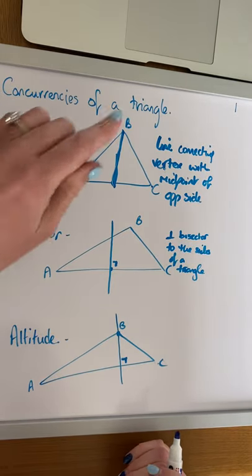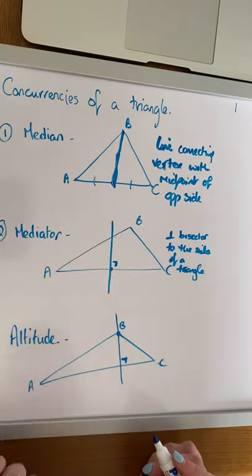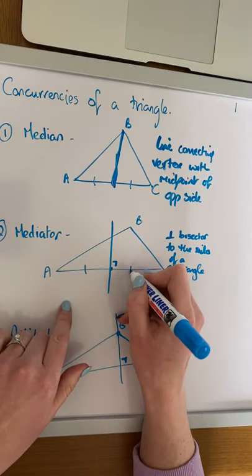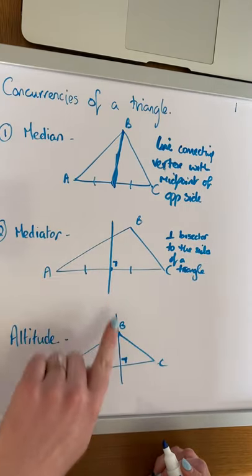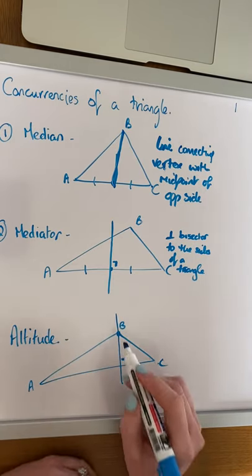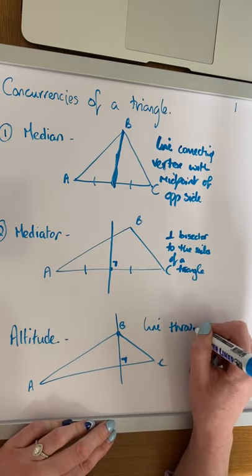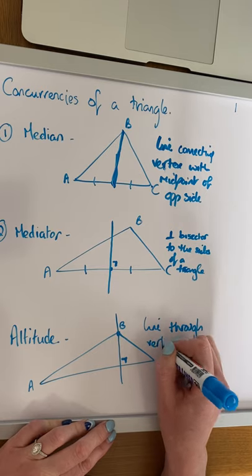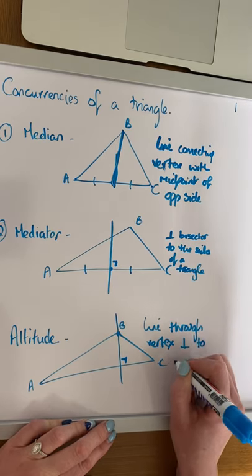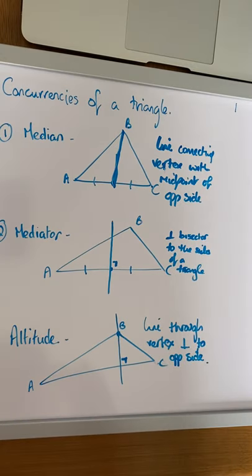So those three definitions we need to know: the median — a line connecting the vertex with the midpoint of the opposite side; the mediator — the perpendicular bisector of the side of a triangle; and the altitude — a line through the vertex which is perpendicular to the opposite side.